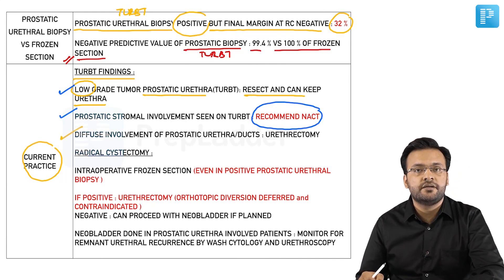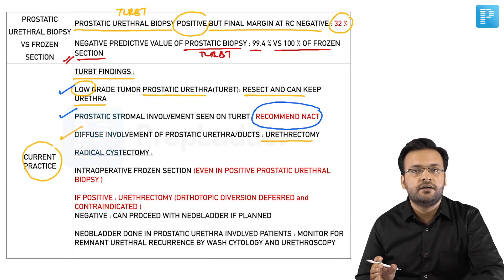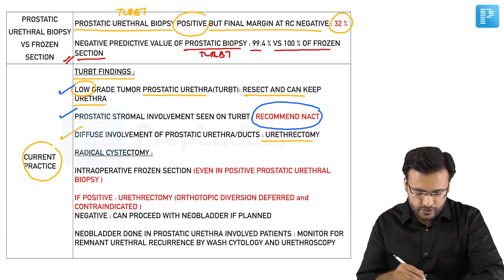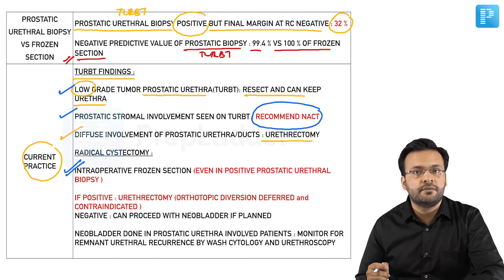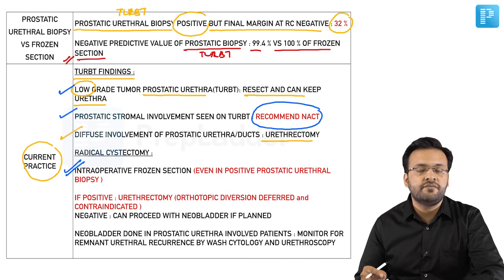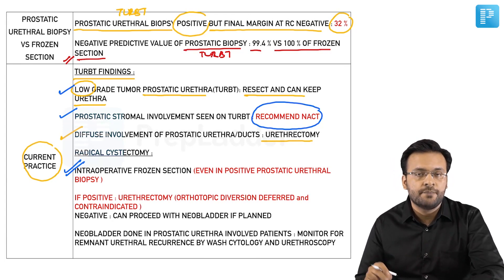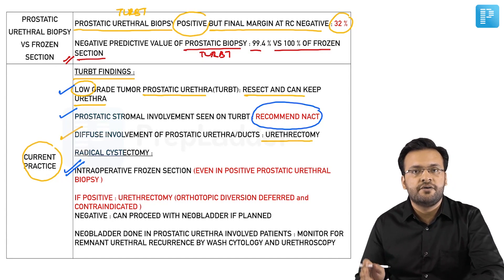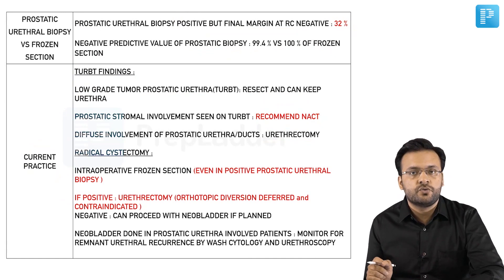In patients with prostatic stromal involvement, neoadjuvant chemotherapy is recommended prior to radical cystectomy. If there is diffuse involvement of the prostatic urethra and duct or CIS, urethrectomy is indicated. Even in patients with positive urethral involvement at the time of TURBT, intraoperative frozen section should be performed, as in one-third of patients with prostatic urethral involvement at TURBT, the final margin at cystectomy was negative. You cannot deny neobladder formation based solely on TURBT urethral involvement; you must reassess at cystectomy with frozen section. If positive, defer neobladder and perform urethrectomy; if negative, neobladder can proceed.